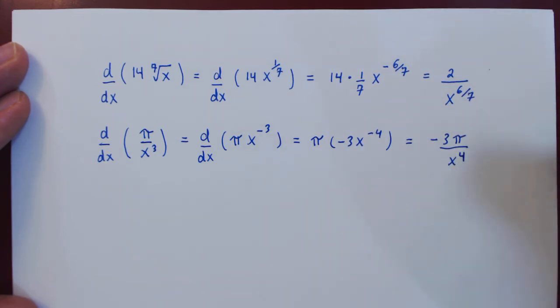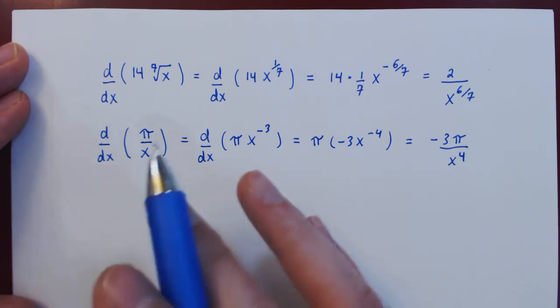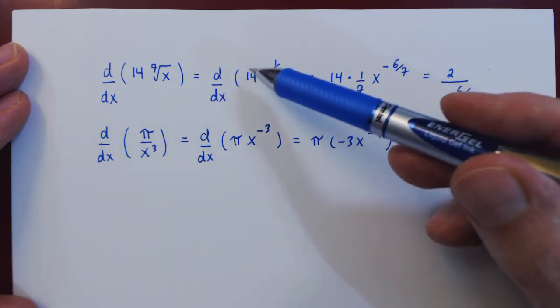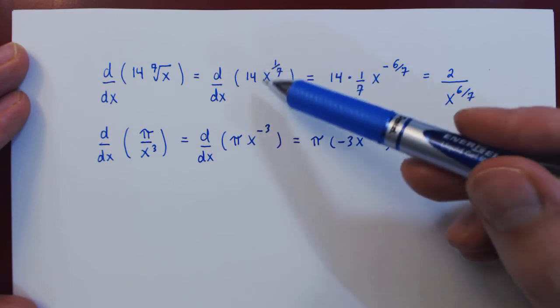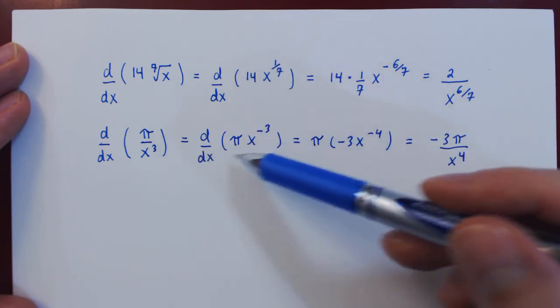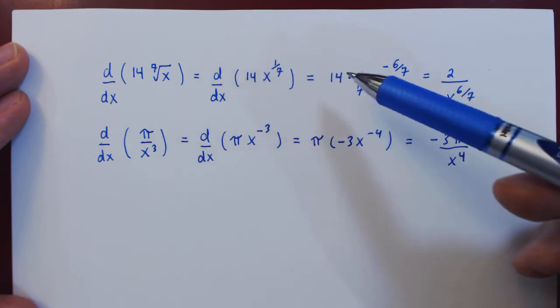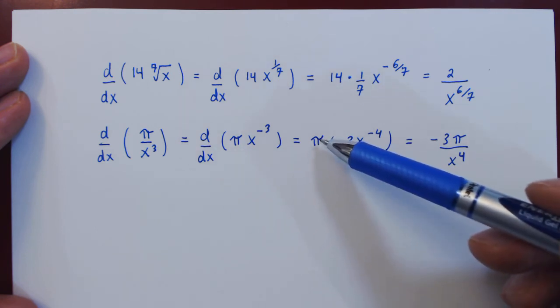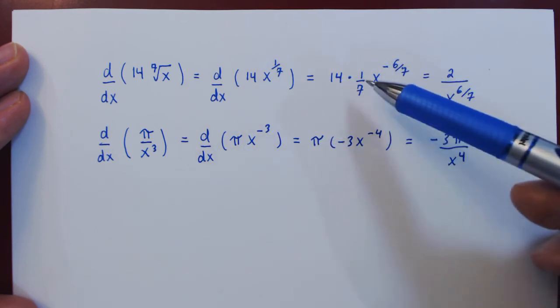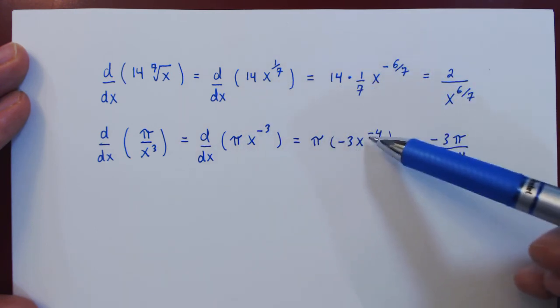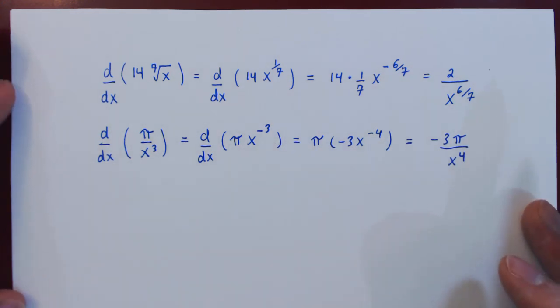And this completes our two examples of the constant rule of differentiation. You can see it's very simple. If you have a constant multiple in front of a function of x and you differentiate, the constant multiple simply stays where it is, and it is multiplied by the derivative of the function of x. And that's it.